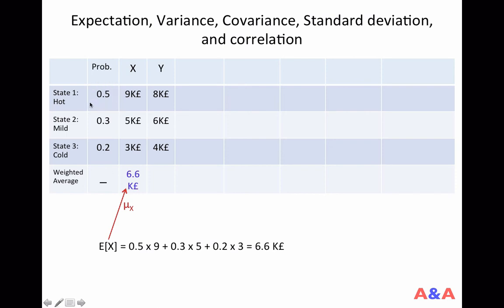So it is 0.5, probability 0.5 times the corresponding value 9,000, plus probability 0.3 times the corresponding value 5,000 pounds, plus the probability 0.2 times the corresponding value 3,000 pounds. Basically, you compute the products of the probabilities and the corresponding values and you sum up the products.